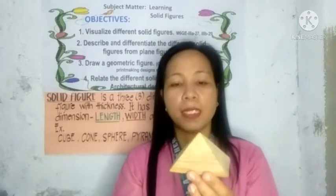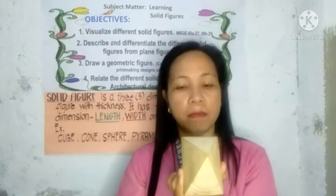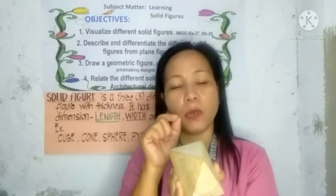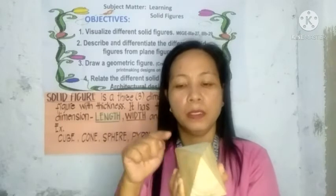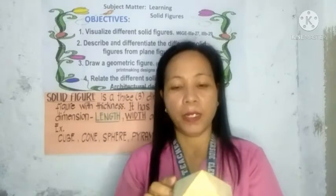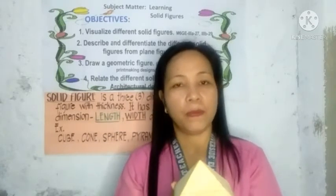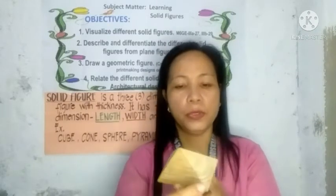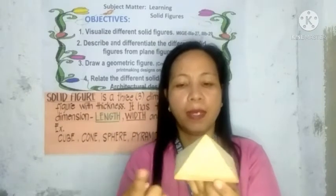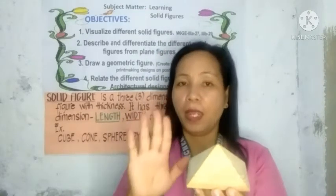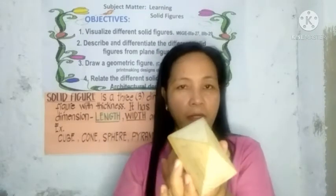Now let's count the vertices. A vertex is where lines meet and create a corner. In a rectangular pyramid, there are five vertices. What about the edges? There are eight edges in a rectangular pyramid.